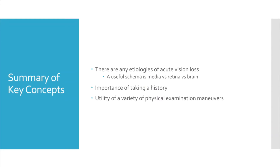To summarize some key concepts: there are many etiologies of acute vision loss, and a useful schema to classify these are those occurring in the media, the retina, or the brain. A good history and physical exam are necessary to both narrow the differential diagnosis and uncover the acute process that is causing this vision loss.